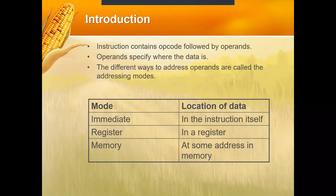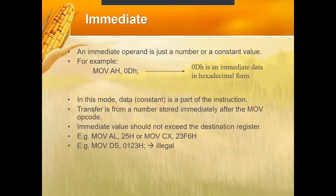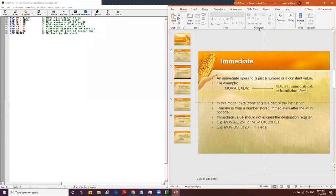There are three kinds of addressing modes: immediate, where the data is put directly in the instruction itself; register, where the data is inside a register; and memory, where the data is at a certain memory location or variable. For example, in immediate mode the operand is just a constant value, such as MOV AH, 0Dh.